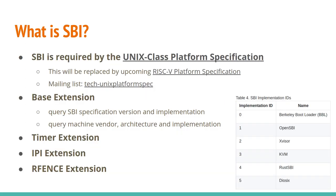SBI is required by the Unix class platform specification, and soon this will be replaced by the RISC-V platform specification. The discussion for both happens on the tech-unix-platform-spec mailing list. In SBI we have several extensions, starting with the base extension, which allows querying the version, implementation, and machine vendor/architecture info. We also have the timer extension, the IPI extension for interprocessor interrupts, and the remote fence extension.